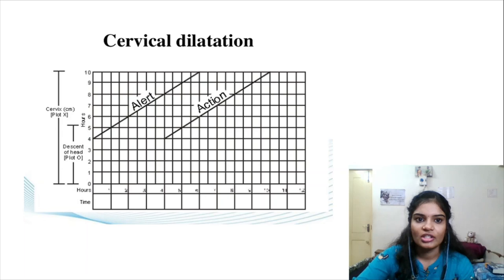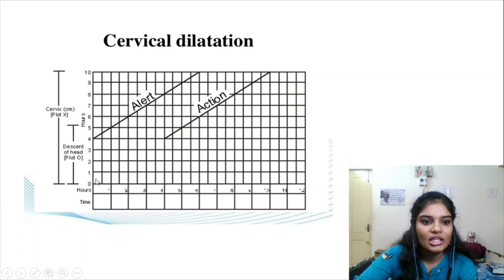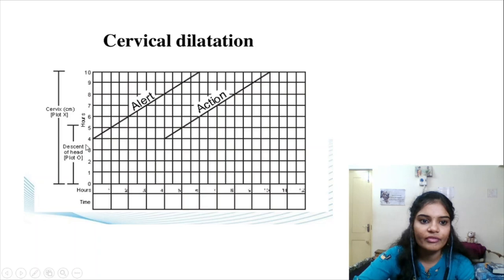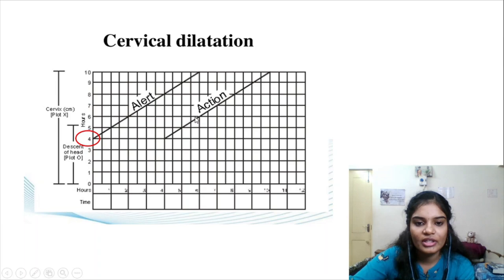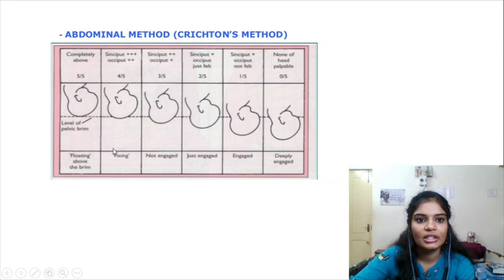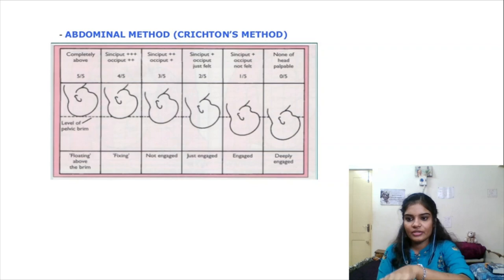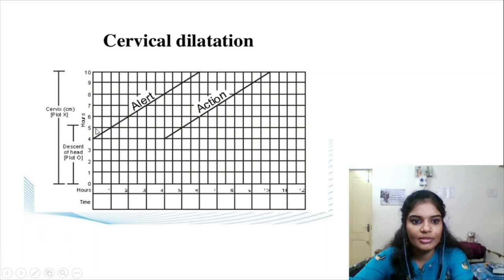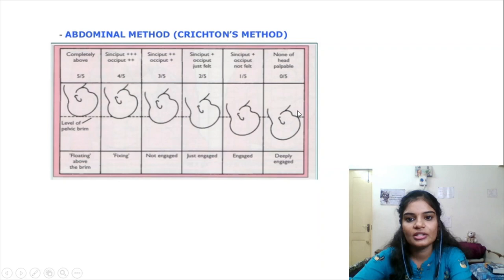For cervical dilatation: the modified WHO partograph starts plotting at 4 cm. This is the alert line. Cervical dilatation is marked using symbol X every 4 hours. Descent is marked using symbol O using the Christian method — abdominal palpation with 5 fingers to see how much head is palpable. If 5 fifths are palpable, mark at 5; if nothing is palpable, mark at 0.